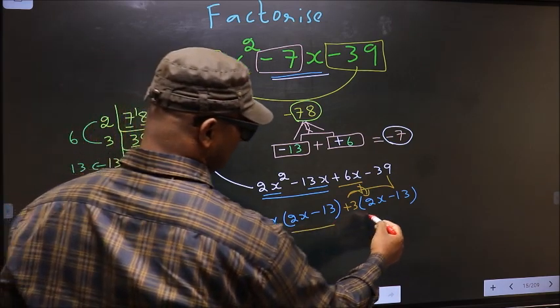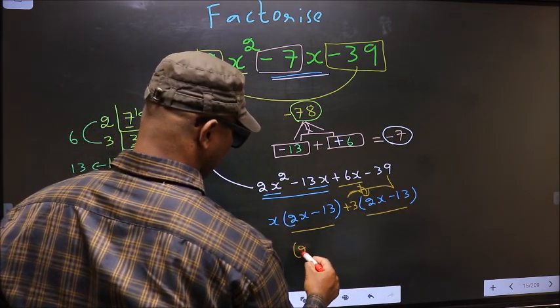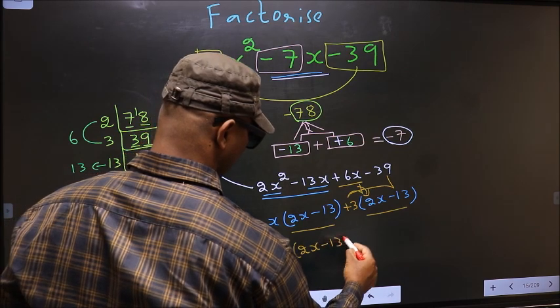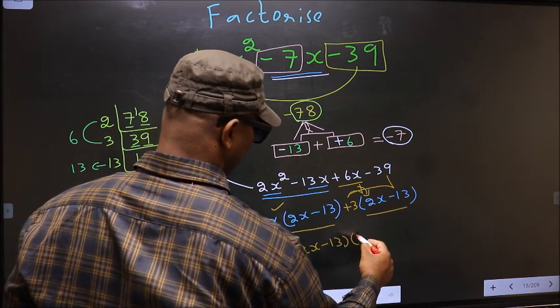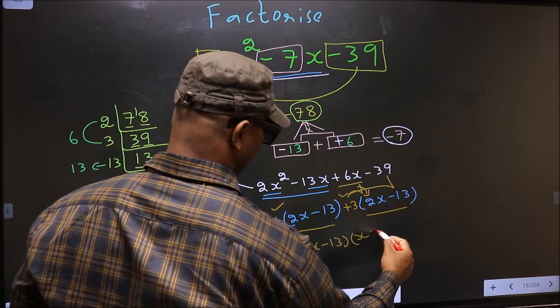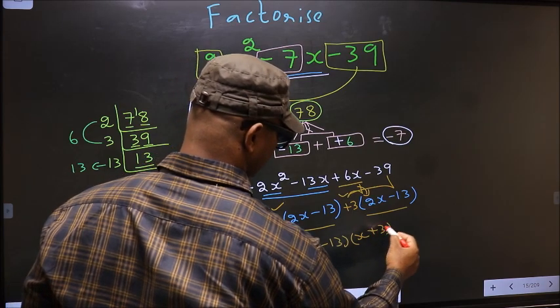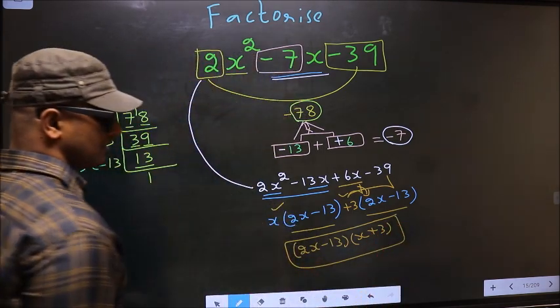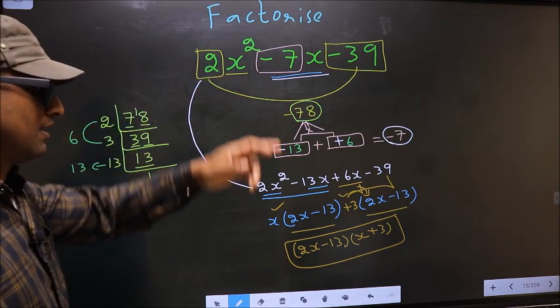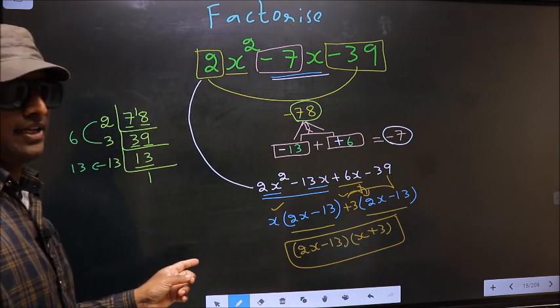Now you take out (2x-13) common. So here you have x and here you have +3. This is our answer: (2x-13)(x+3). Am I clear?